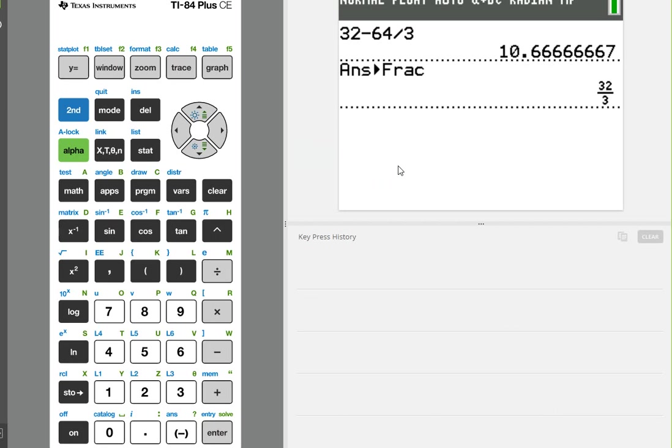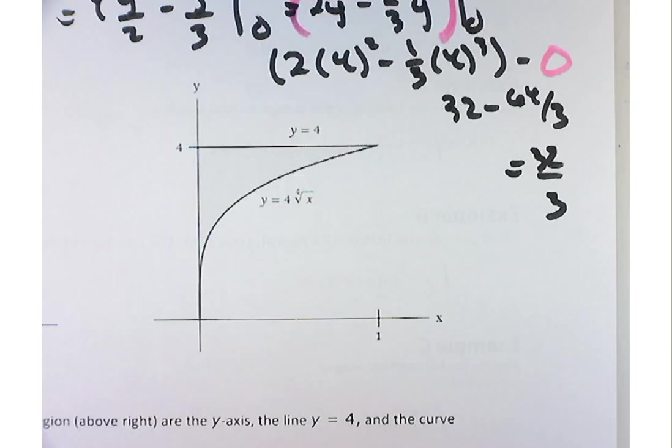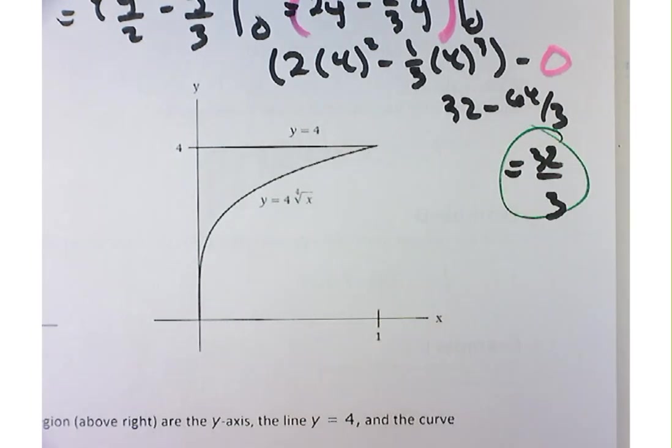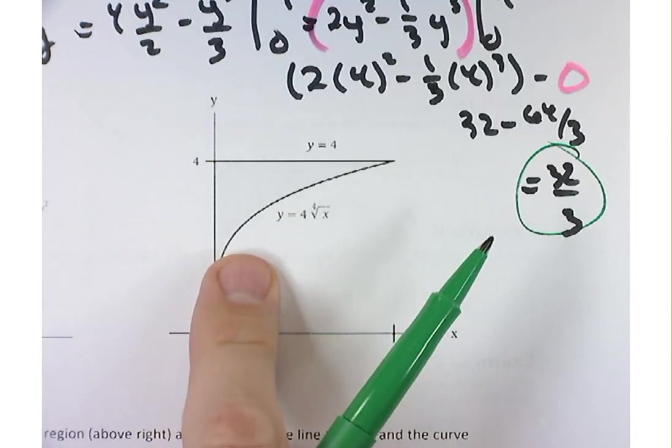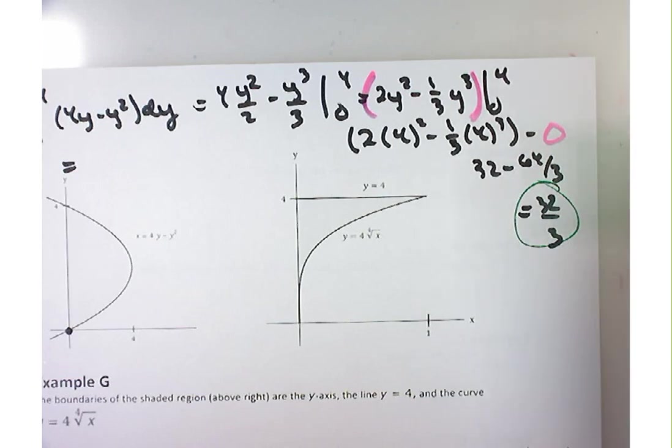So if you don't feel like doing the arithmetic and coming up with 32 over 3 for the answer, take out your calculator. Just do it this way. 32 minus 64 divided by 3. Then hit the answer to fraction key and bam, 32 over 3. So 32 over 3. And that's your answer. The second part of this pertains to this graph. Are we okay with this first function?